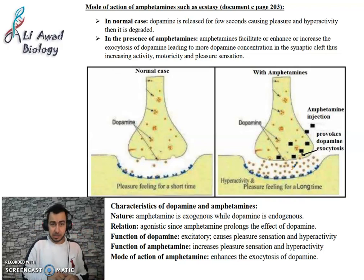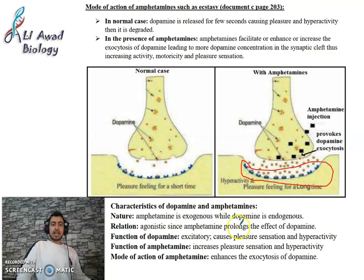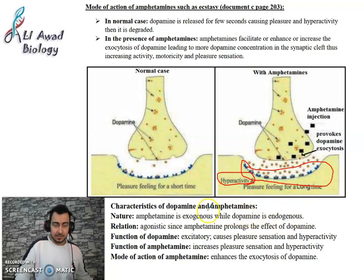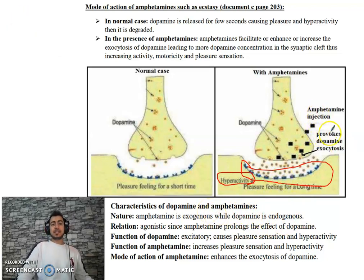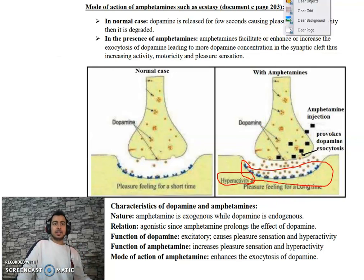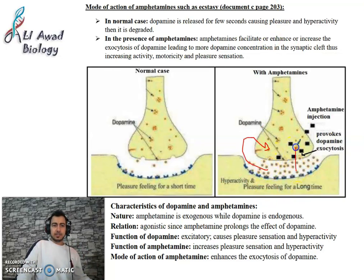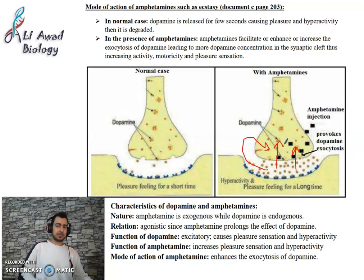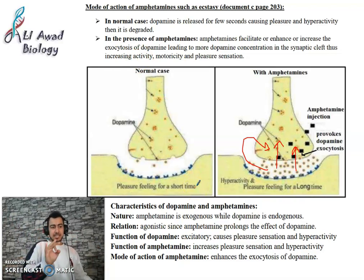When the concentration of dopamine is very high in the synaptic cleft due to stimulated exocytosis by amphetamine, more dopamine binds to the receptors resulting in hyperactivity. When amphetamines end their function and are degraded, all the dopamine found in the synaptic cleft will be reabsorbed — no dopamine at all — and the person feels very fatigued.